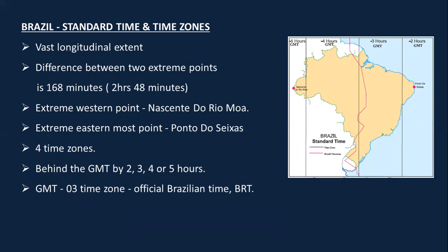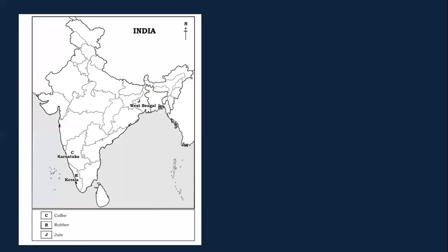Brazil has four time zones: minus two, minus three, minus four, and minus five — meaning two, three, four, and five hours behind GMT. The official Brazilian time (BRT) is three hours behind GMT. So if you living in India have to trade with anyone in Brazil, you follow only this one official Brazilian time.